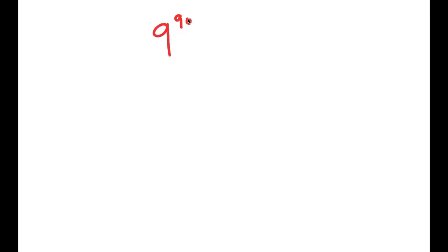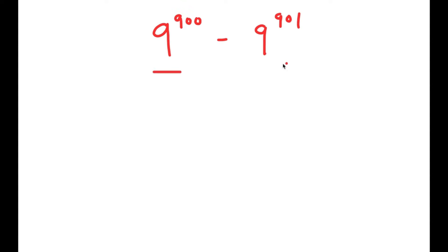In this video I'm going to be solving the problem 9 to the power of 900 minus 9 to the power of 901. To solve this I'm going to start by evaluating my terms. We have 9 to the power of 900 and 9 to the power of 901, and these two terms are pretty similar except that the exponent for 9 to the power of 900 is one less than the exponent for 9 to the power of 901.